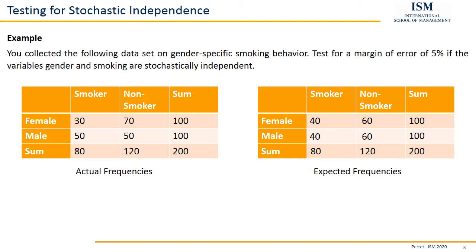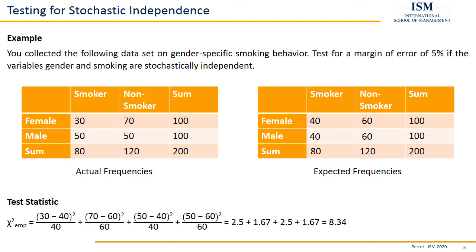We insert these into our formula to get our test statistic. For female smokers: (30 − 40)² / 40. Then for female non-smokers: (70 − 60)² / 60. And similarly for the two male entries. The chi-squared statistic has four different terms. If we calculate the whole test statistic, we get a value of 8.34 — that's our test statistic.